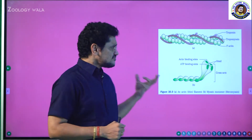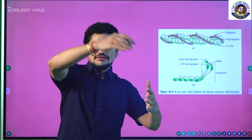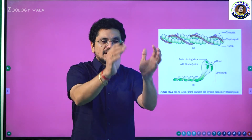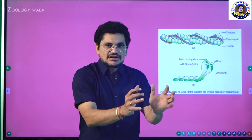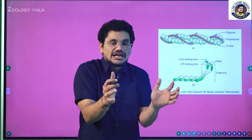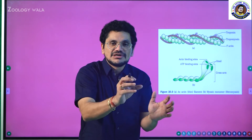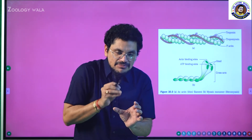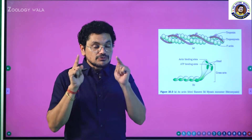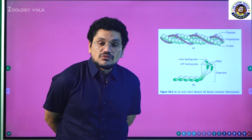If you observe the muscle filaments — the entire muscle is covered by a perimycium which contains a number of bundles of muscle fibers. Each bundle of muscle fiber is called a fascicle, and it contains a number of muscle fibers. Inside the fiber, a number of fibrils and filaments are present. Now I am going to show you what those filaments and proteins are.